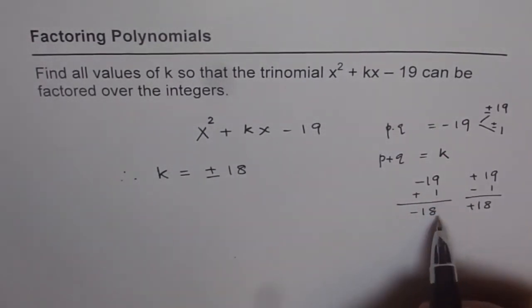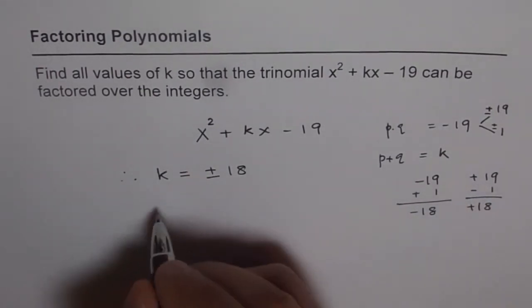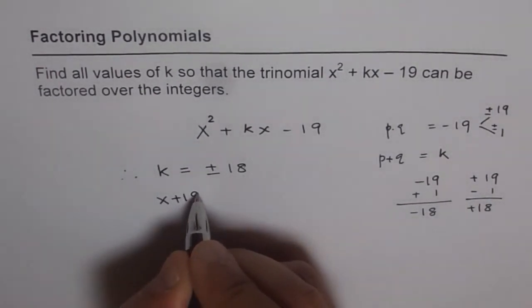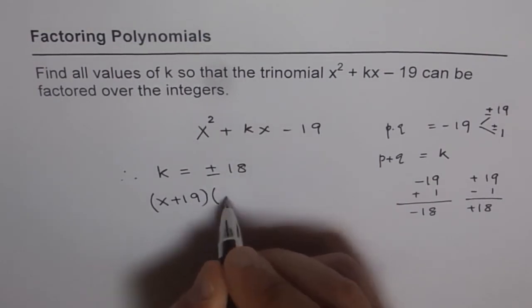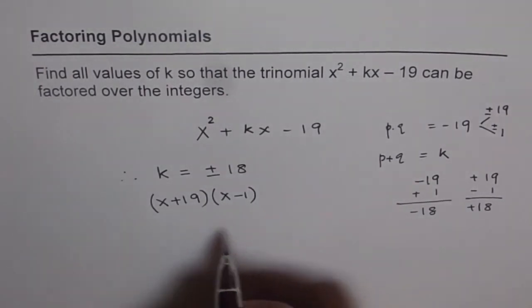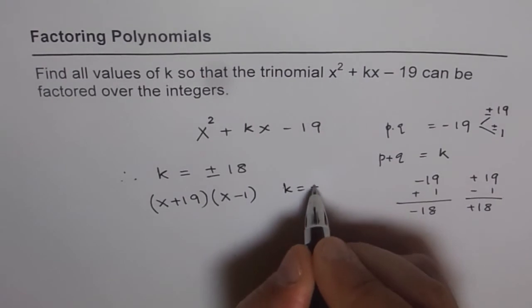So, if it is plus 18, in that case, you will use x plus 19 times x minus 1. This is when k equals to plus 18.